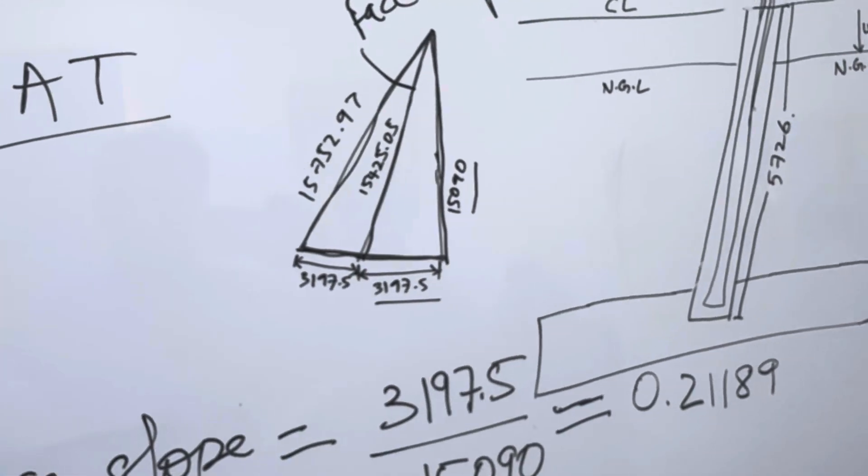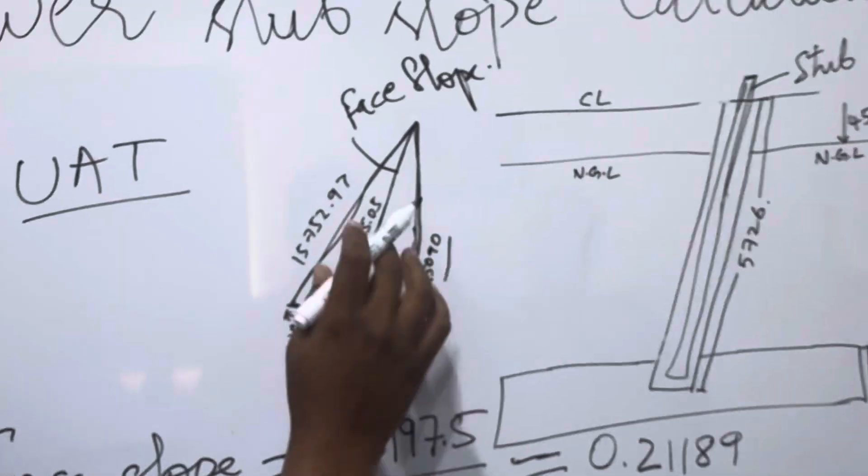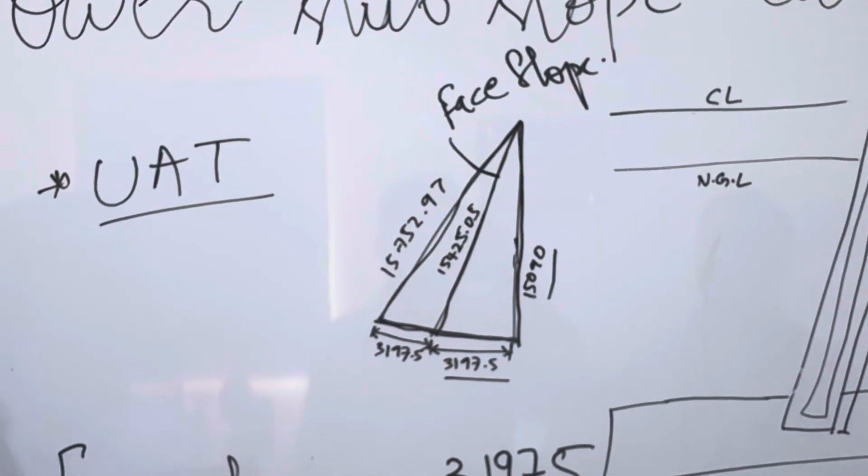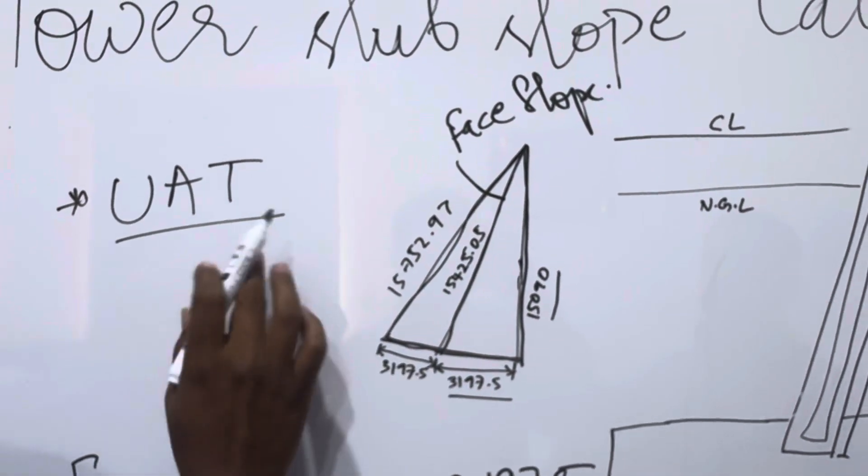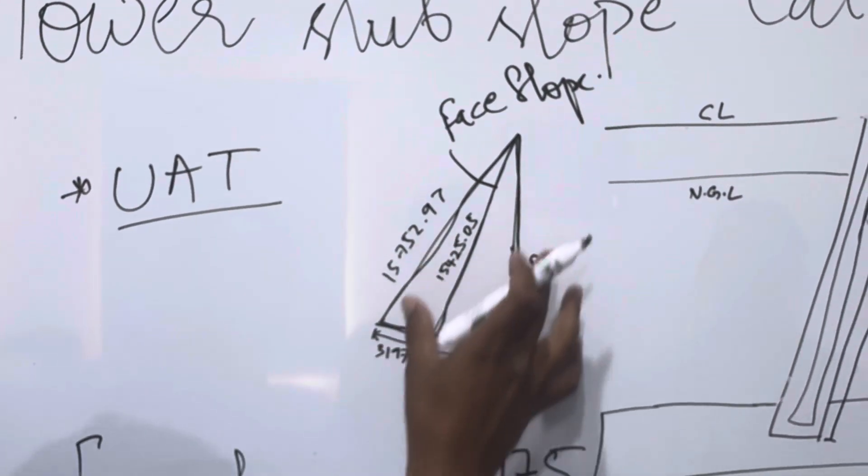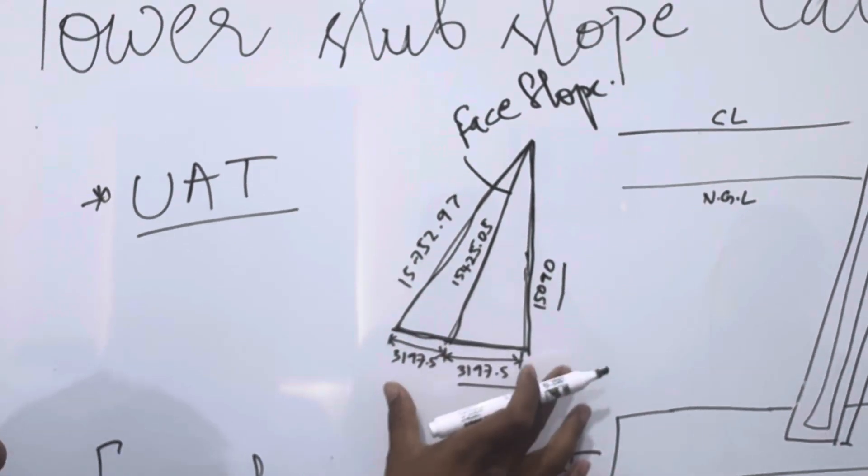So this is the same, now we make diagram on the board. So we will, this tower of type is UAT and this is our slope, always given in the drawing.